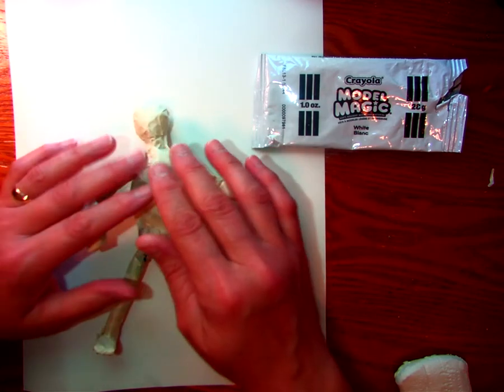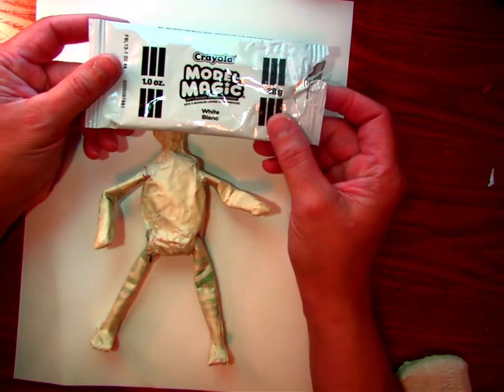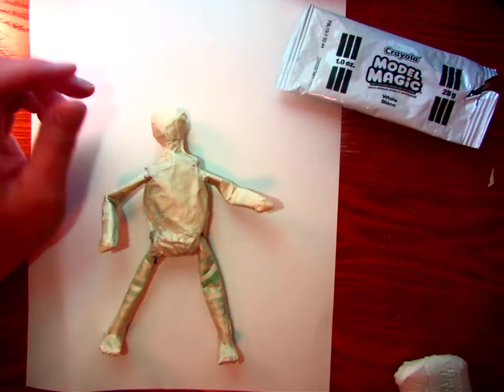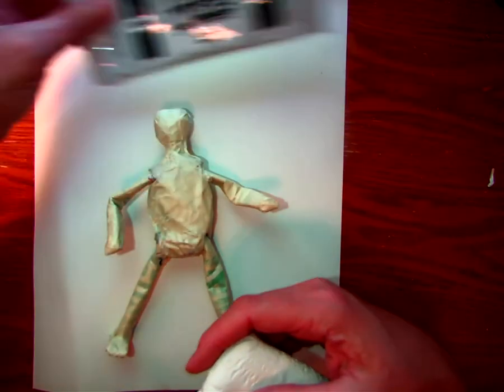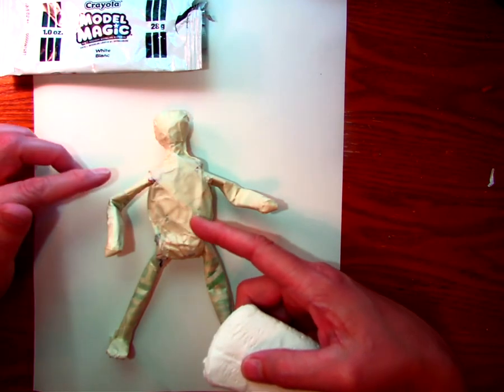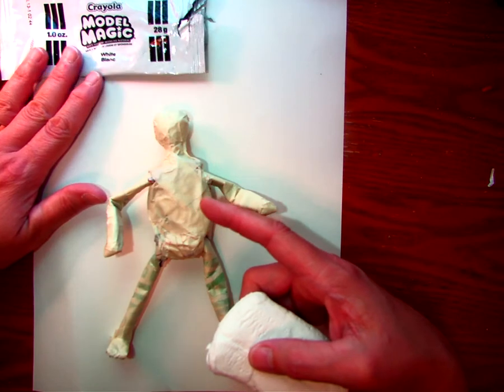But if you're wanting to add Model Magic, Model Magic comes in a little package like this. They have different colors or they have white and then the white you can paint afterwards. This will allow you to add some cool details to it and make it a little bit more smooth and add some clothing details and that kind of stuff afterwards, nose, all that stuff.